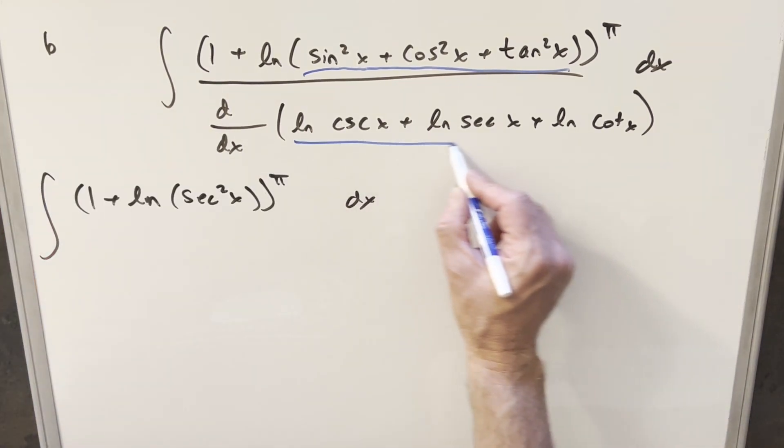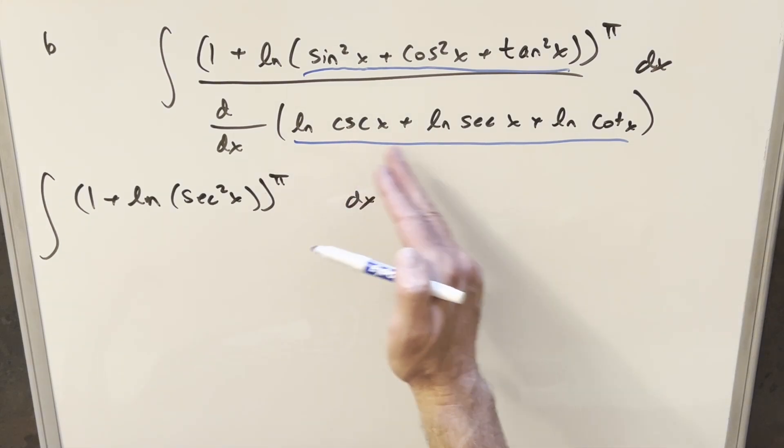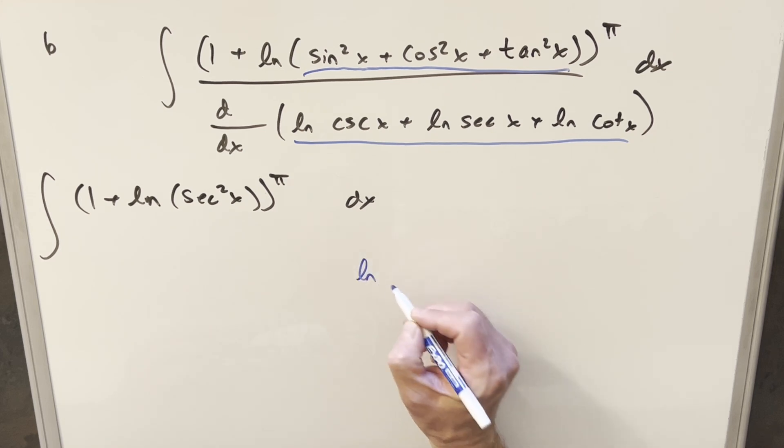Next, let's see what kind of simplification we can get here. Now with log properties, we're adding natural log, natural log, natural log. We can turn that into multiplication. And also what I want to do is write this in terms of sines and cosines.